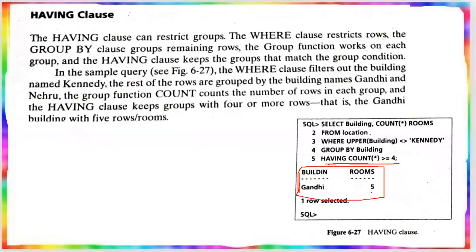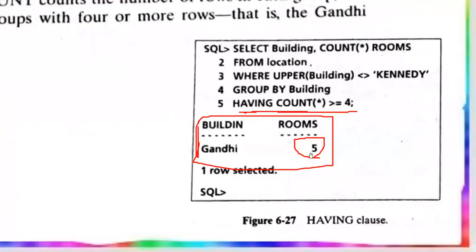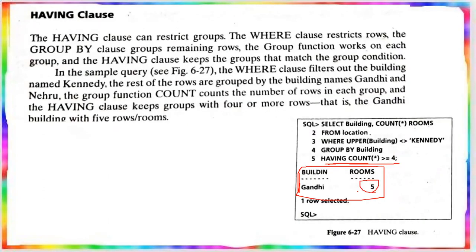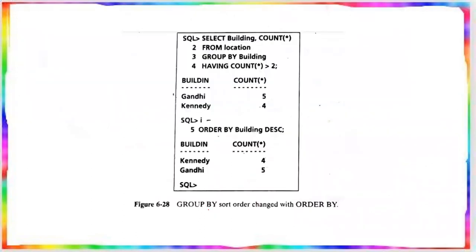So Gandhi has 5 — counting 1, 2, 3, 4, 5. The condition is greater than or equal to 4, so Gandhi with count 5 appears in the output. Kennedy also qualifies with count 4. That is the output. So with HAVING, we are able to restrict the groups after applying the group function.